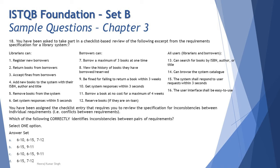Let's check 6 and 15. Point 6 says system responses within 5 seconds for librarians. Point 15 says the system shall respond to all users — librarians and borrowers — within 3 seconds. That's a conflict: in the librarian category you say up to 5 seconds, but in the all-users category you say up to 3 seconds. The librarian requirement is conflicting. So 6 and 15 is a valid conflict. Now let's check the 9 and 11 combination in option B.